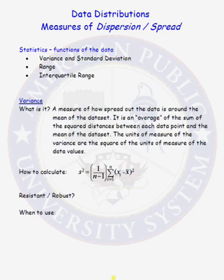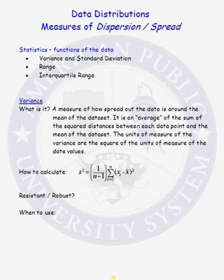Anytime you have a set of data, there are four things that you must describe about that data set or the data distribution. You must describe the shape of the data distribution. You need to give a numerical summary for the measure of center and the measure of spread or dispersion. And you must indicate if there are any outliers in the data set.